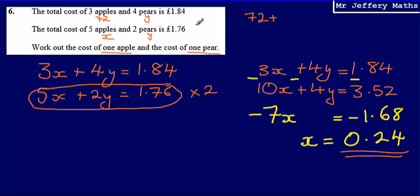72 plus 4 pears, or 4y, is equal to £1.84. Solving this, or I should really, if I've got that as a decimal, I should have this as a decimal as well. So 0.72 plus 4y is equal to 1.84.